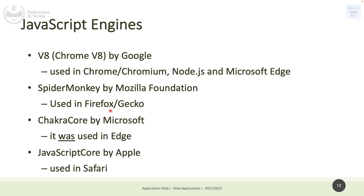JavaScript needs an engine to run. The Google engine is called V8, used in Chrome, Chromium, and Microsoft Edge. Mozilla has its own engine for Firefox. JavaScript Core is used in Safari on Apple systems. Node.js uses the V8 engine from Google to provide interpretation of the language. These engines all implement the standard but are developed and maintained separately.